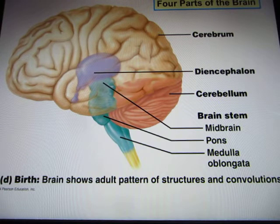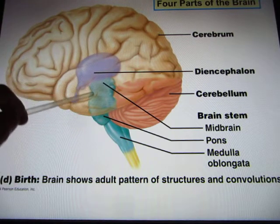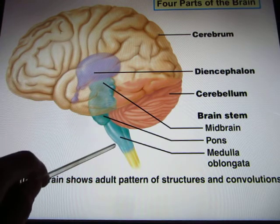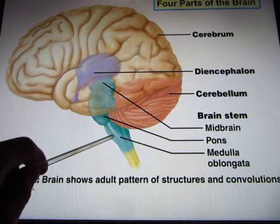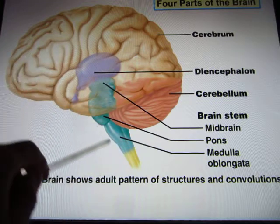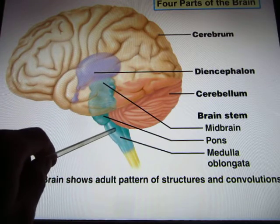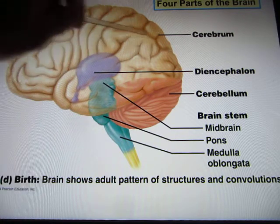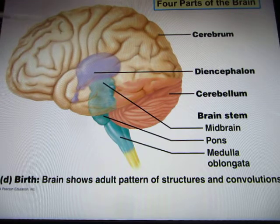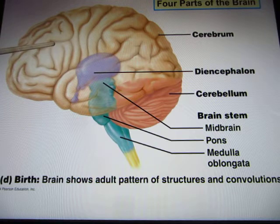Now let's look at the brain. The most primitive brain area is the brain stem, which is divided into the midbrain, the pons, and the medulla oblongata. This is sometimes called the 'lizard brain' — it controls many important physiological functions like heart rate and breathing. On the outside you have the cerebral cortex, which is what makes us human, with all those sulci and gyri.